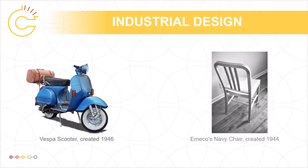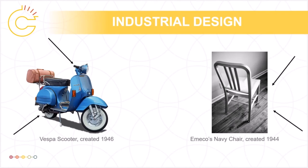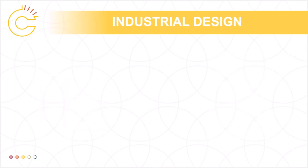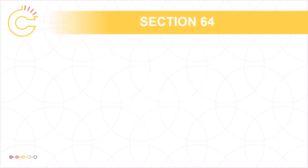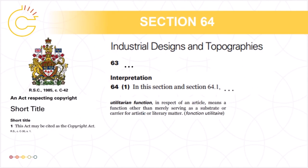In some cases, copyright issues may also intersect with industrial design. Industrial design protection is a long-established form of IP. Industrial designs are similar to patents in that they require registration, but rather than protecting the inventiveness of a product or process, they protect the visual features of shape, configuration, pattern or ornament, or any combination of these applied to a finished product. Historically, industrial designs have been viewed as the poor cousin of the IP family and have generally attracted less attention than patents, copyrights, and trademarks. The interaction between copyright and industrial design is covered in section 64 of the Copyright Act, which may be the most poorly written section of the entire Act. In short, when a creative object is manufactured in quantities of 50 or more, one should consider whether industrial design protections are implicated.